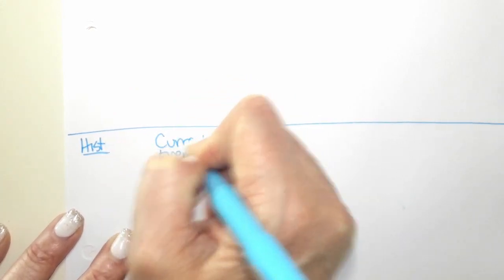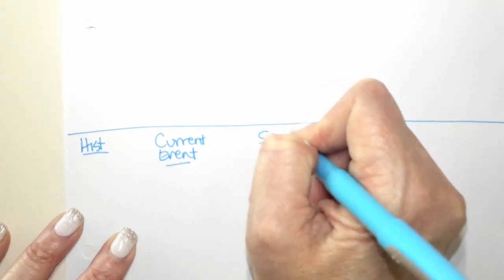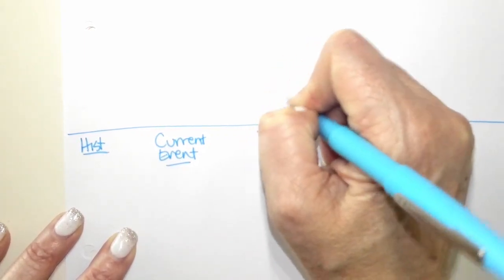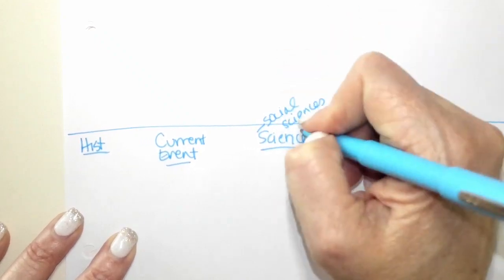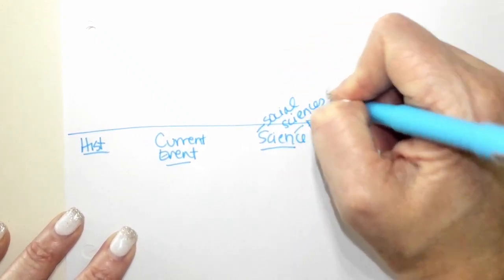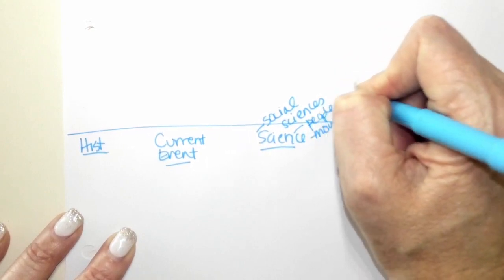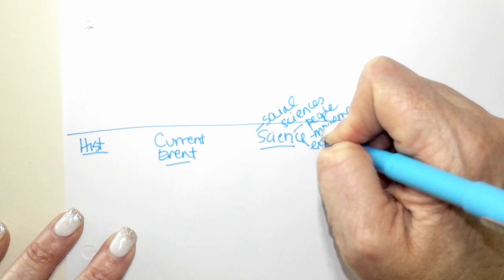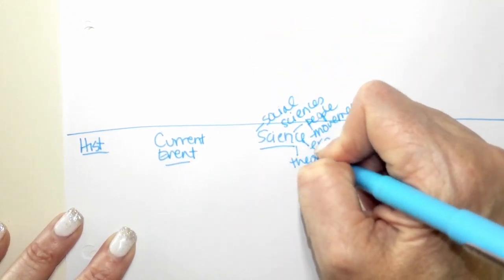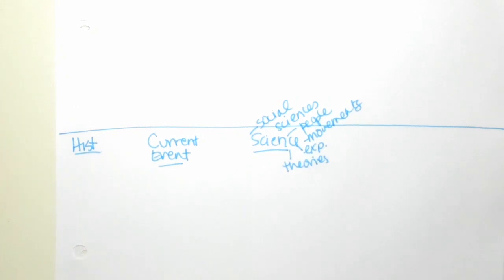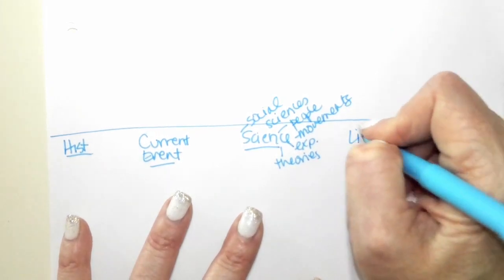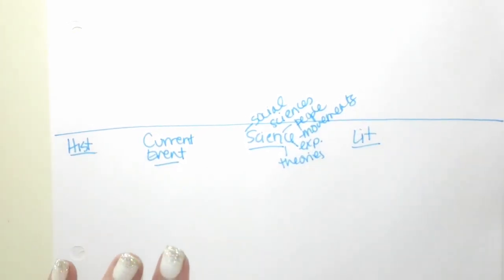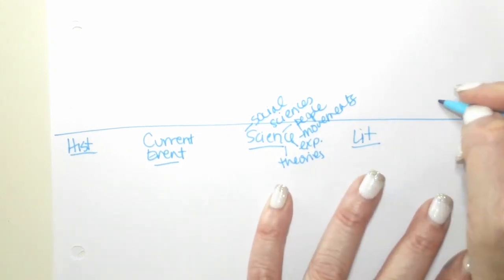Current event. Science. And when we talk about science, we talk about even our social sciences as well. When we talk about science, we can talk about people, we can talk about movements, we can talk about experience or experiments, and we could talk about theories. So don't limit yourself to just one thing in science. External literature. Personal expertise. We want to stay away from personal experience. I don't really care about it.